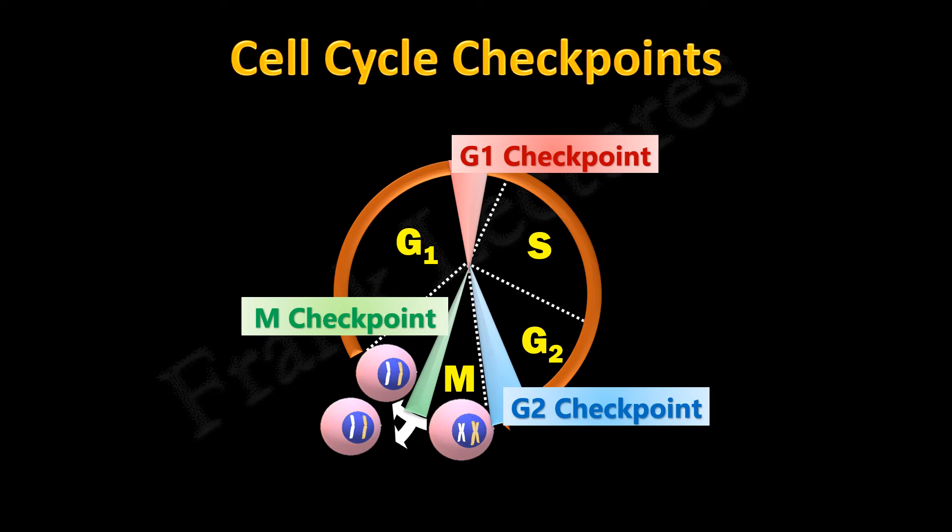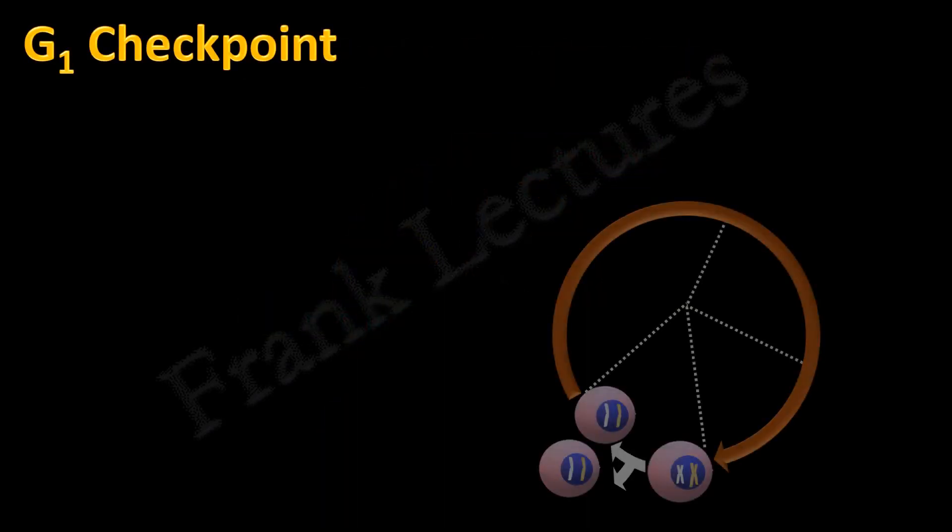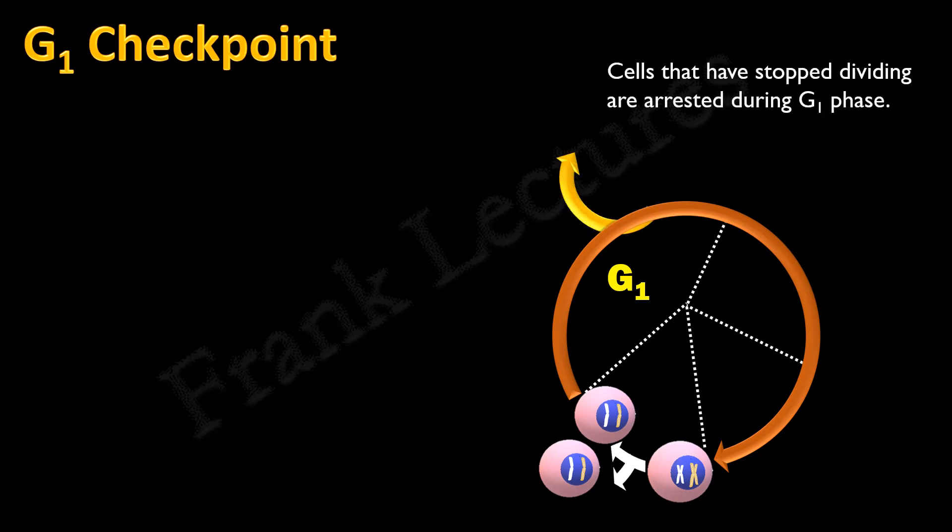Let's understand why these transition points and the corresponding checkpoints are important. We know that the G1 phase varies among cell types. Cells that have stopped dividing are arrested during the G1 phase. This arrested state is known as G0 state. Most cells in our body are in G0 state. Cells such as mature nerve and muscle cells never leave G0, but cells such as liver cells can leave this G0 state when required, for example to repair the damaged liver cells. The first checkpoint occurs during late G1. At this checkpoint, a cell has two options: first is to continue through the cell cycle, second to exit the cell cycle and enter the G0.